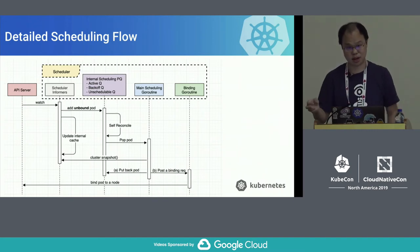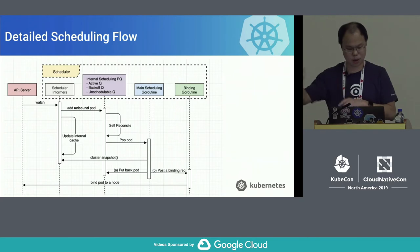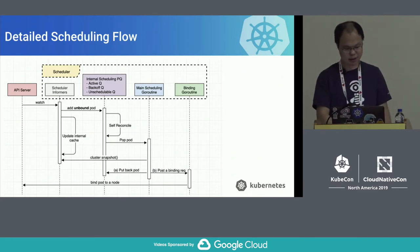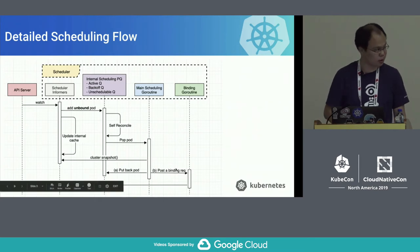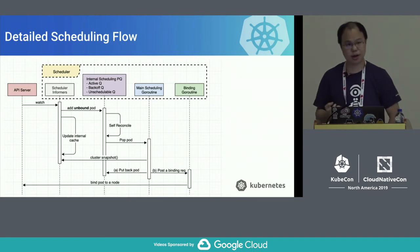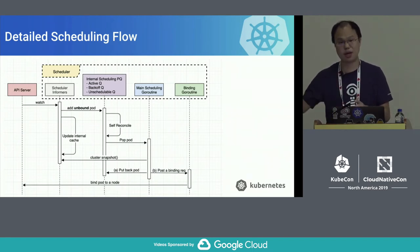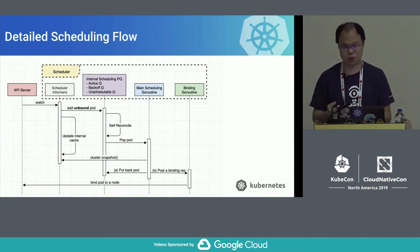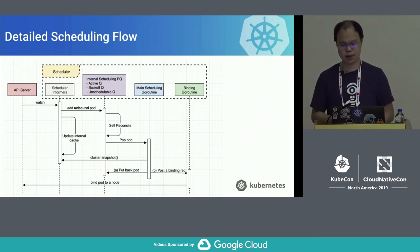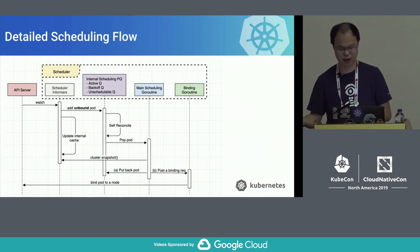Sometimes binding takes time, and we don't want that to block the main goroutine. In the binding phase, we use optimistic concurrency — meaning even before the bind finishes in the API server, we assume the pod has been assigned to the node and update the internal cache. If binding fails, we get a notification and invalidate the cache. That's the basic internal flow of the scheduler.